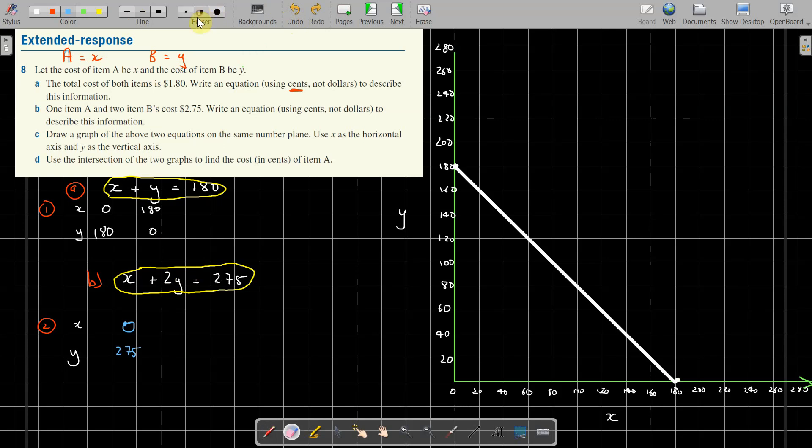I'm sure we can, there we are, because it's 2Y. Okay, so when X is zero, Y is not 275, it's 2Y is 275, so that's 137 and a half, because you've got to have two of those. Here's 275, there, better. 137 and a half, which is there. That's when X is zero.